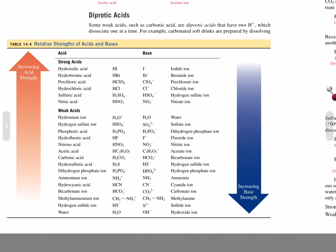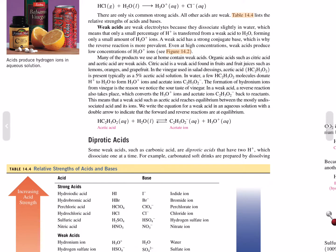All other acids are weak and all other bases are weak. Weak acids are weak electrolytes because they dissociate slightly in water, which means that only a small percentage of protons is transferred from the weak acid to water, forming only a small amount of hydronium ion. A weak acid has a strong conjugate base, which is why the reverse reaction is more prominent. Even at high concentration, weak acids produce low concentrations of hydronium ions.